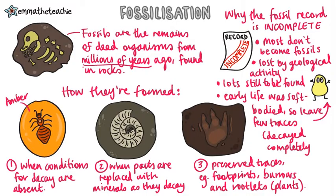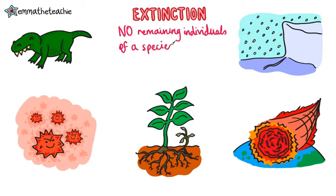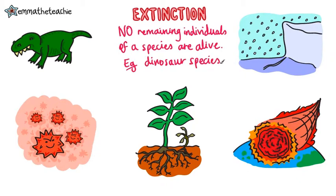This is why we cannot be certain about how life began on Earth. Now we're going to look at extinction. Extinction occurs when there are no remaining individuals of a species still alive. The most commonly known examples are the dinosaur species. You need to know how extinction can occur, so let's look at the five methods.